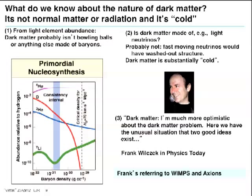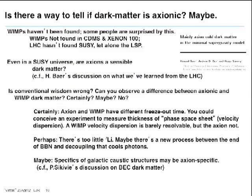Frank Wilczek in Physics Today wrote a column that had enormous impact because he starkly said there are only a couple candidates that we know. Doesn't say there can't be others — there could be unknown unknowns — but among the known unknowns, there are WIMPs and there are axions. That was a very powerful column, whether he recognized it or not.